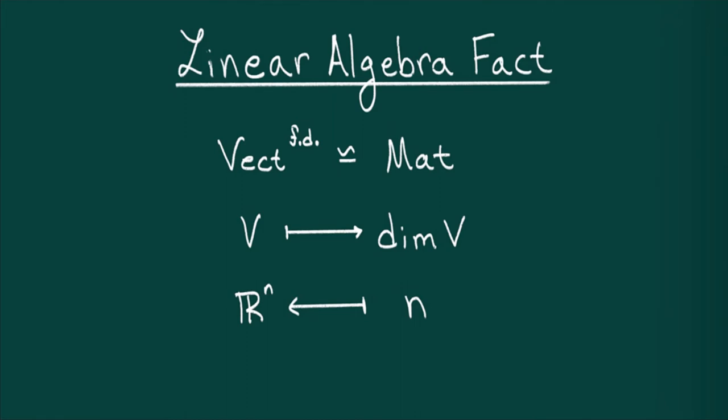One of the benefits of categories is that there is a precise sense in which these two categories are, quote, equivalent. Why is this at all interesting? Well, whereas computers can understand matrices, nature presents us with vector spaces.